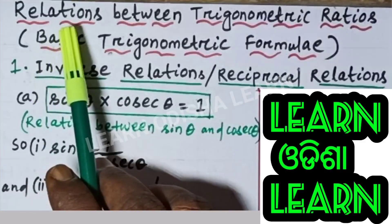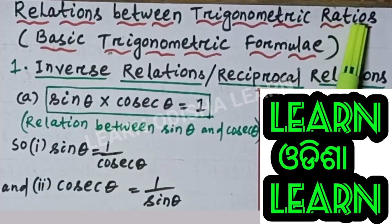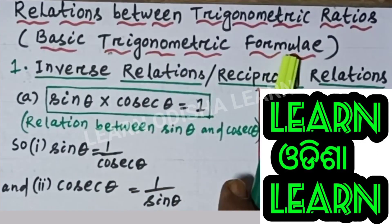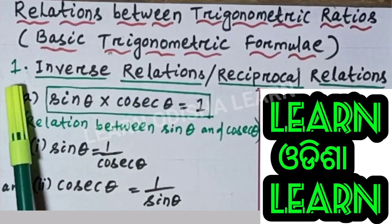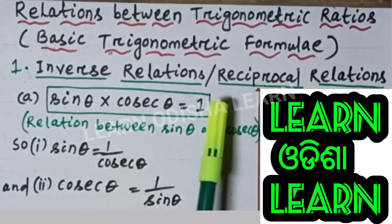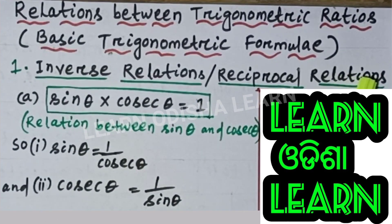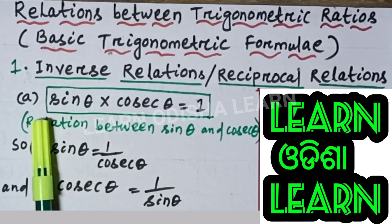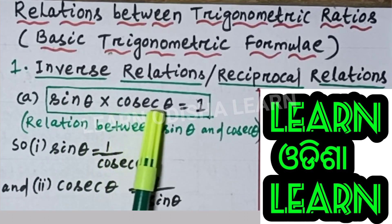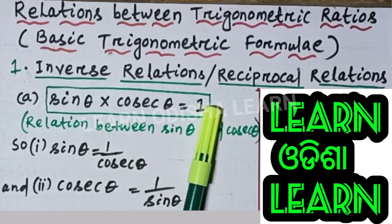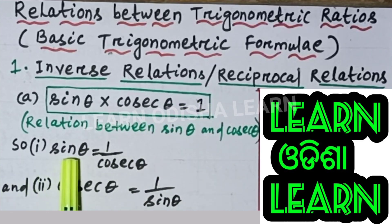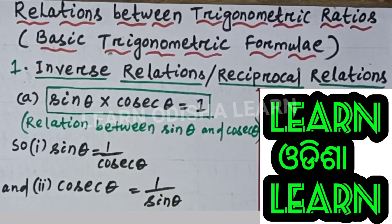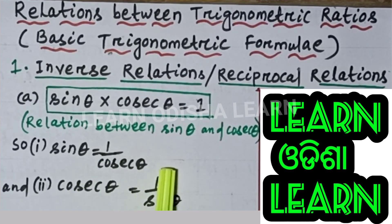Now we will discuss relations between trigonometric ratios, also called basic trigonometric formulae. First are inverse relations, also called reciprocal relations. There are three inverse relations. The first relation is sin theta multiplied by cosec theta equals 1, from which sin theta equals 1 divided by cosec theta, and cosec theta equals 1 divided by sin theta.